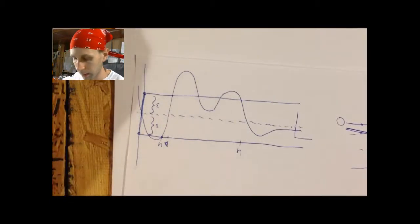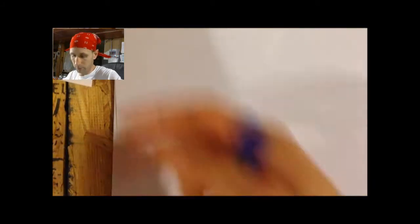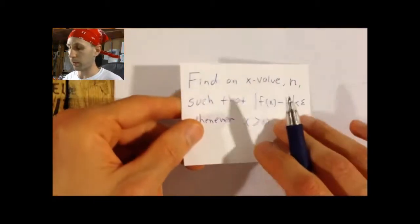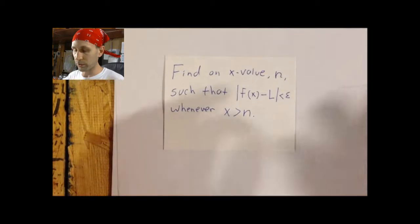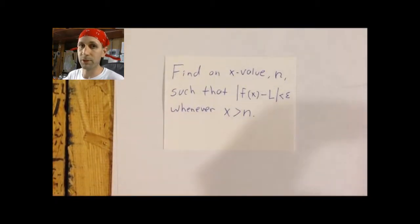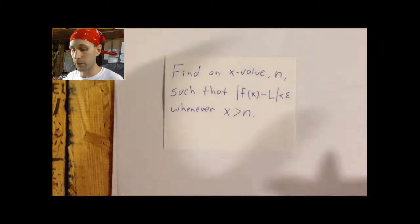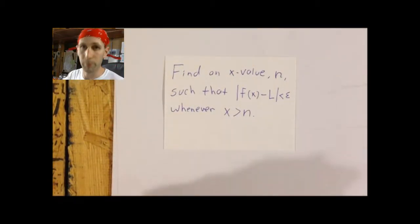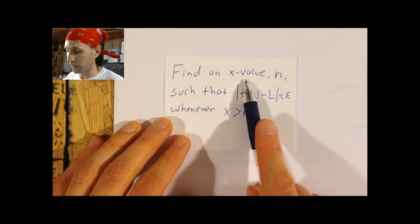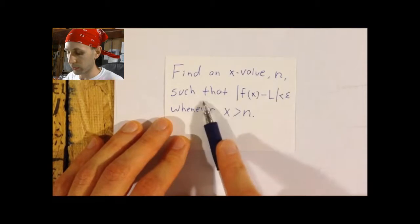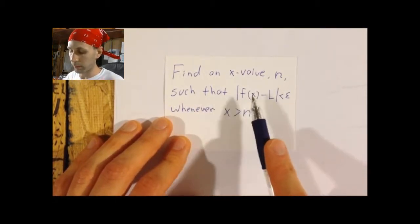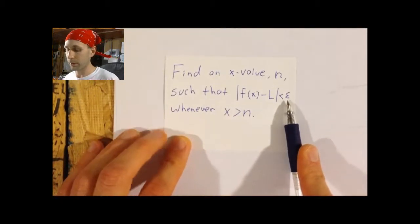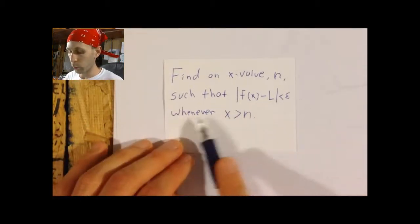So what this turns out to be is just another game with absolute values — playing with absolute value inequalities. Our job, if we suspect that the limit as x approaches infinity of some function is some number L, is to define some x-value N such that the distance between the values of the function and that number will be less than epsilon, no matter how small, whenever x is greater than N.